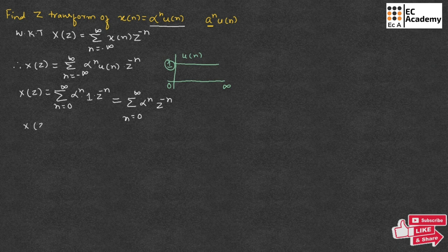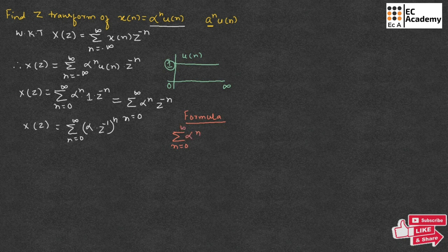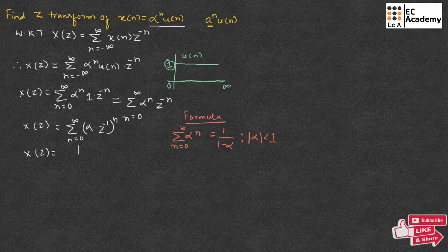We can rewrite X(z) as summation from n = 0 to infinity of (alpha times z^(−1)) to the power of n. Now, remember the infinite sum formula: summation from n = 0 to infinity of alpha^n equals 1 divided by (1 minus alpha), valid when the magnitude of alpha is less than 1.